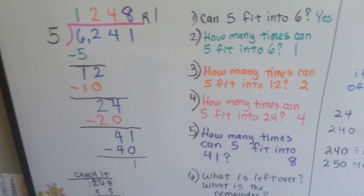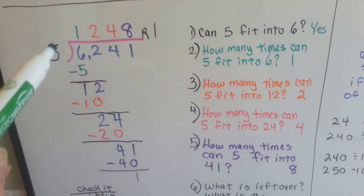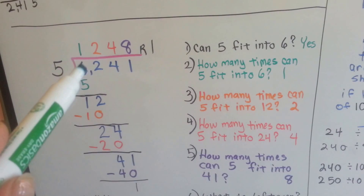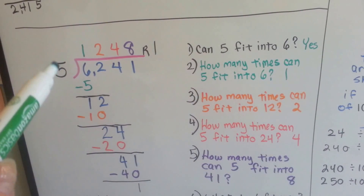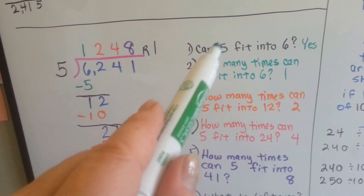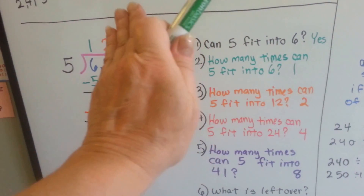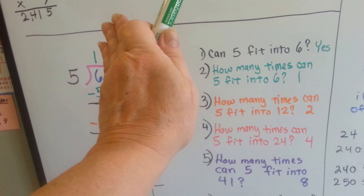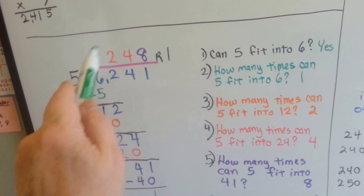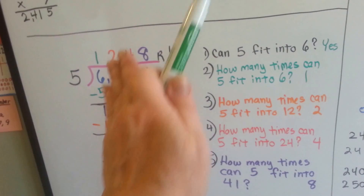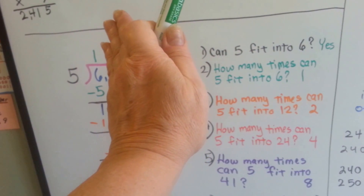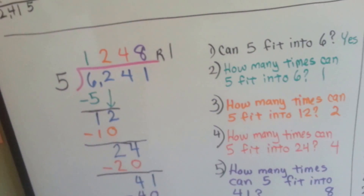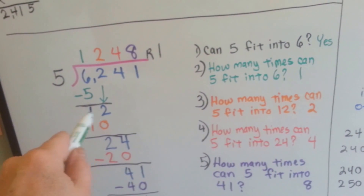Let's try it again. This time there's going to be a remainder. We need to figure out how many times 5 will fit into 6,241 — that's 6,241 divided by 5. First thing we ask ourselves is, can 5 fit into 6? Yes, it can. So we do put the 1 above the 6 this time, because it did fit in. 5 times 1 is 5, so we do our subtraction there, and 6 take away 5 is 1. And now it's this 2's turn to come down. And now we ask ourselves, how many times can 5 fit into that 12?